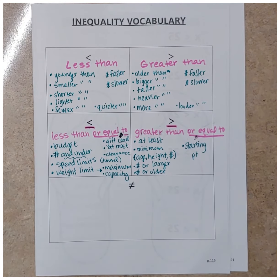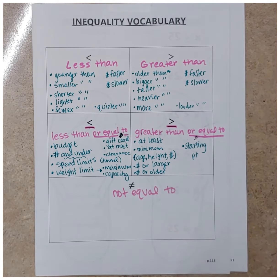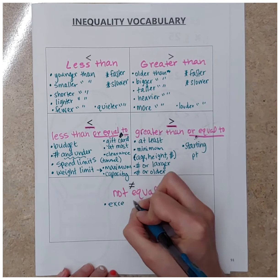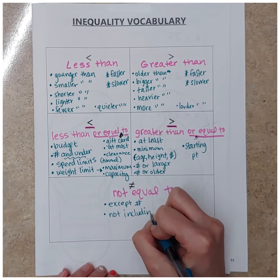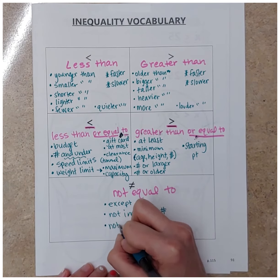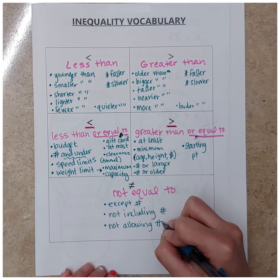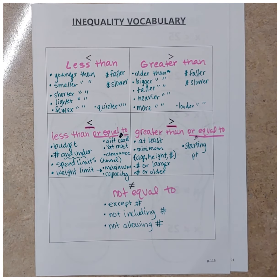Then we have our last symbol — the equal sign with a line through it — meaning 'not equal to.' You can have everything except this number, not including this number. Like not including eight-year-olds at my birthday party, or 'not allowing' a certain age. This right here is a cheat sheet for us to refer back to, and we're going to be adding words to it. This is definitely a live document — we'll continue adding things as we go. If you find a word in one of your scenarios that jumps out at you, you can take the initiative to add it to this list on your own.